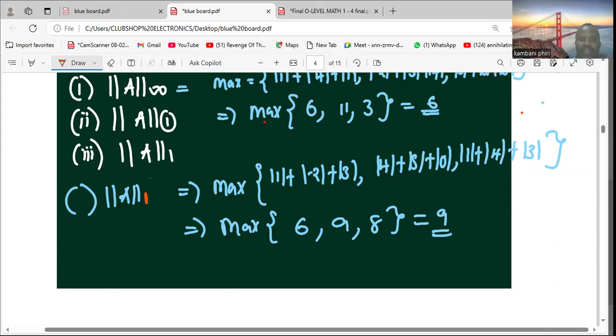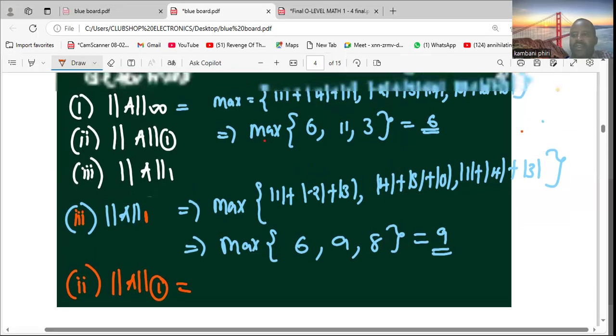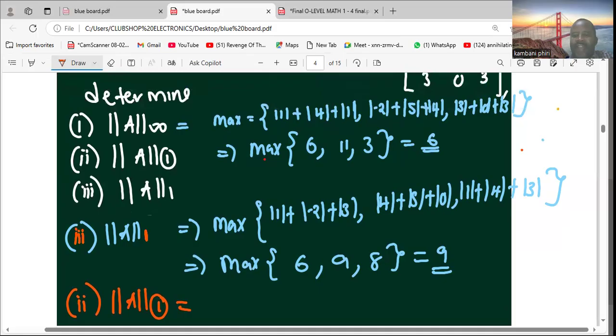This is now actually number three. I had skipped number two. We want the zero-one norm of A. The zero-one norm of A simply means you will get the absolute row sums and add them. The absolute row sums have already been done from this step, so we are just going to say 6 plus 11 plus 3.